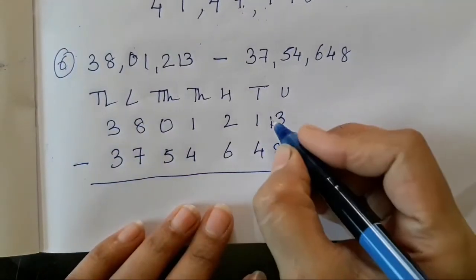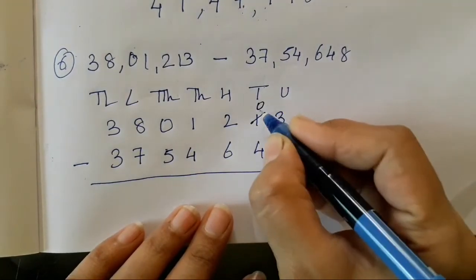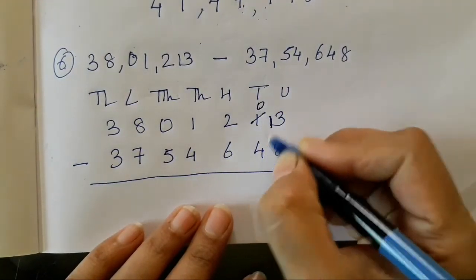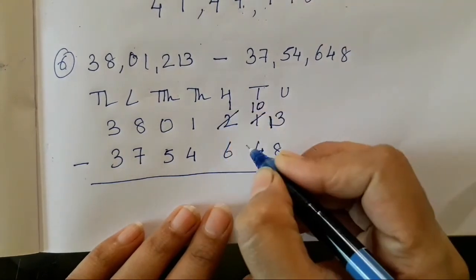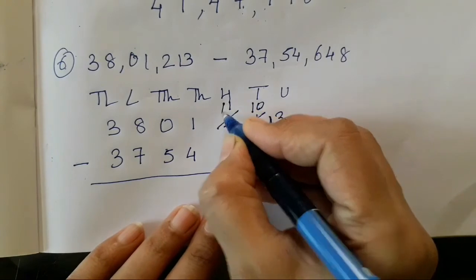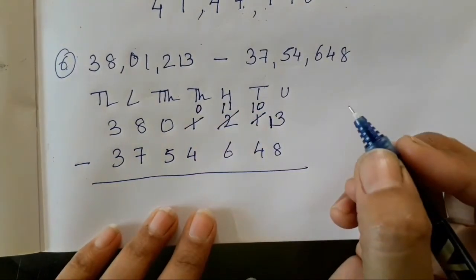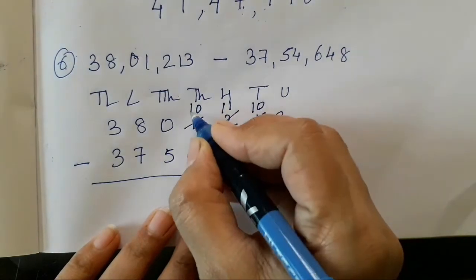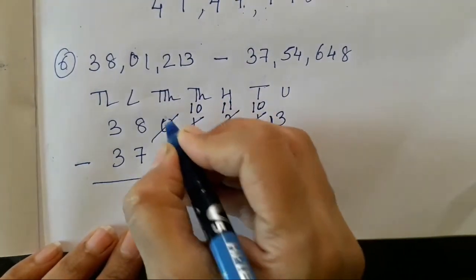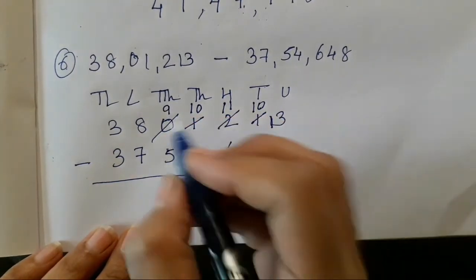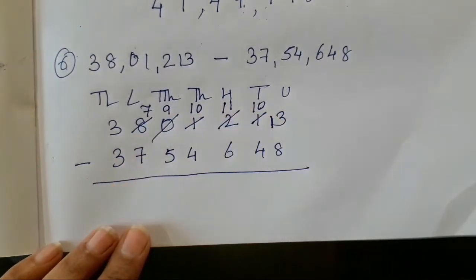Now 3 cannot be subtracted. Therefore we have borrowed 1 from 1 — this will become 0. 0 and 4 cannot be done, so 1 we have taken from 2 — this will become 1. 1 minus 6 cannot be done, so 11. Again 1 we have got from 1, so 0. 0 and 4 cannot be subtracted, so 1. 1 we have got from 9. 9 we have got from 8 — that will be 7.